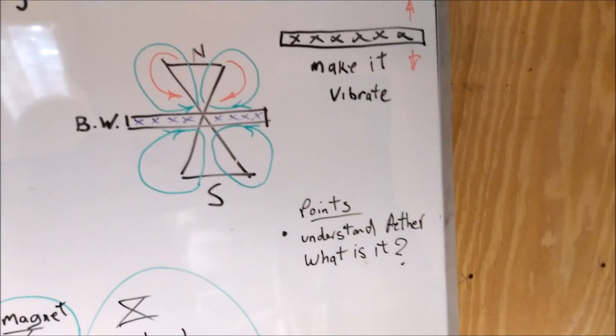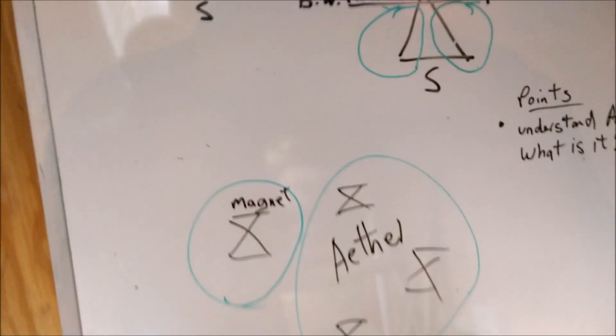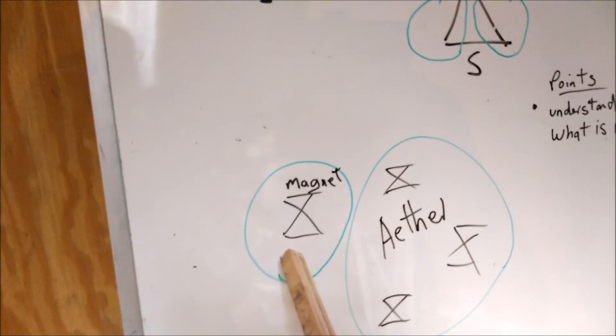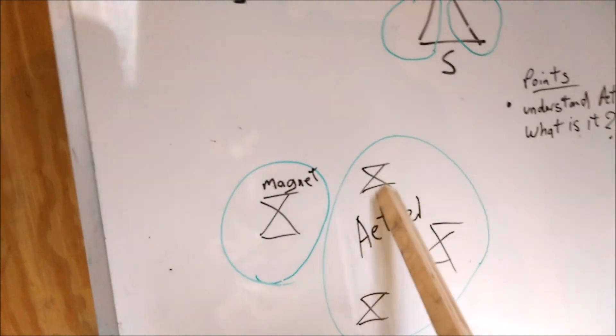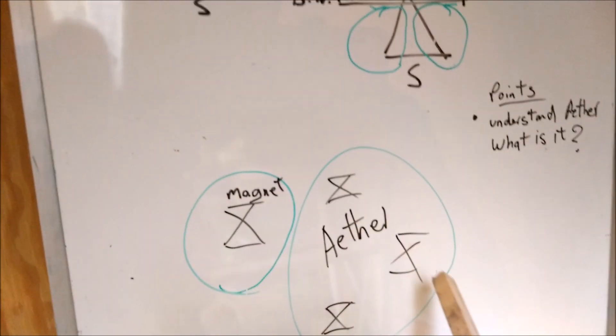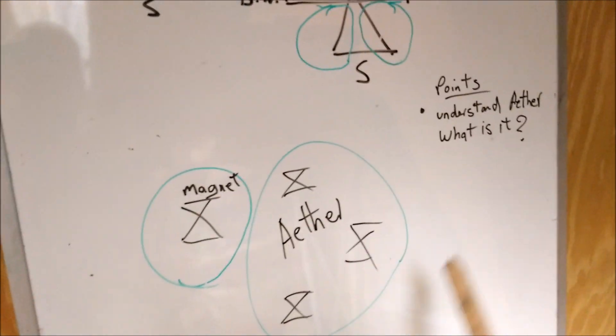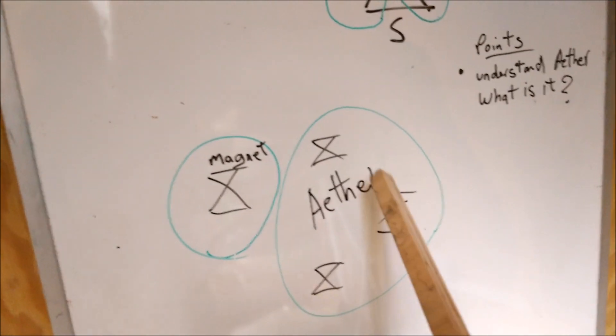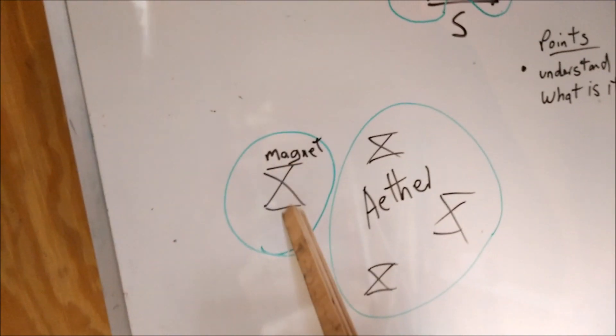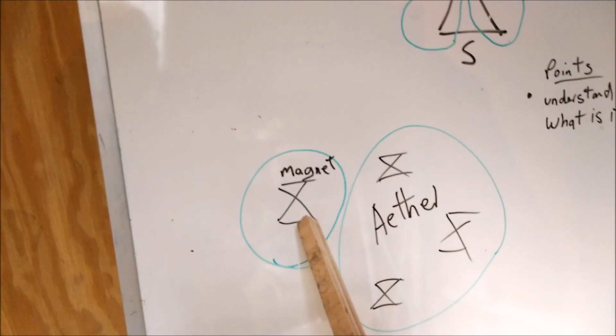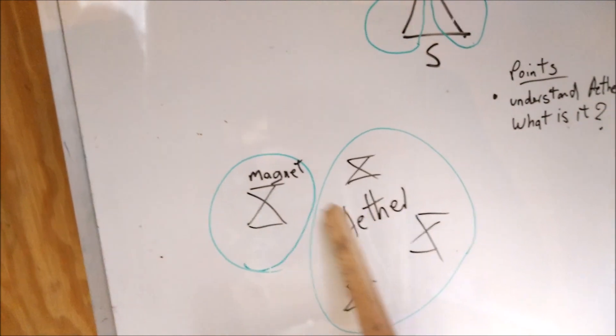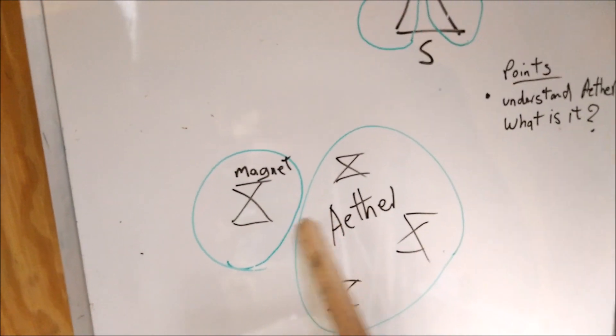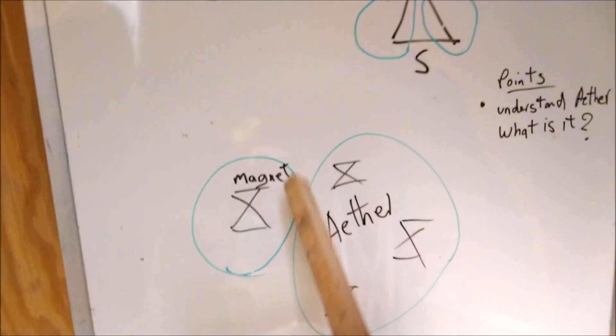The first thing that we've got to understand: these X's here represent a magnet, and these X's here represent the ether, the air if you like, or space or whatever. I'm wondering if the ether could energize the magnet.